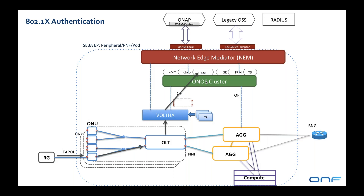The AAA application encapsulates those EAPOL packets in RADIUS and optionally adds fields describing things about the user, such as their connection point to the network, then sends them up to the RADIUS server. There's an exchange between the supplicant — the residential gateway — and the RADIUS server, brokered by ONOS. The AAA application understands the authentication state for this user, and once the user is successfully authenticated, it exports an authorization-approved event over the Kafka bus.